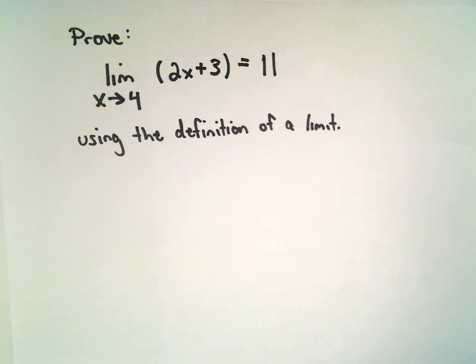Okay, here we're going to prove that the limit as x approaches 4 of 2x plus 3 equals 11 using the precise definition of a limit.